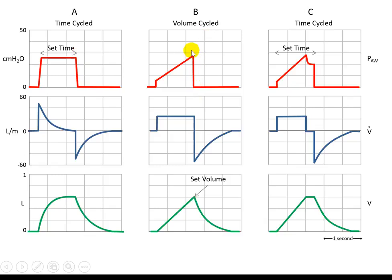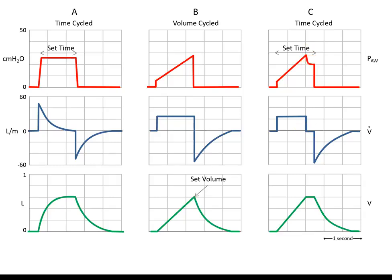When cycling by volume, once you reach a certain volume, immediately after that the pressure is released and exhalation starts. If it is set for time, you can finish the inspiratory flow and deliver the tidal volume, but the time has not elapsed yet for inspiration. That's why the breath goes into a holding period called the plateau period — the volume is inside the lung, the flow is zero, and there is a pressure required to overcome the lung and chest wall elastance.